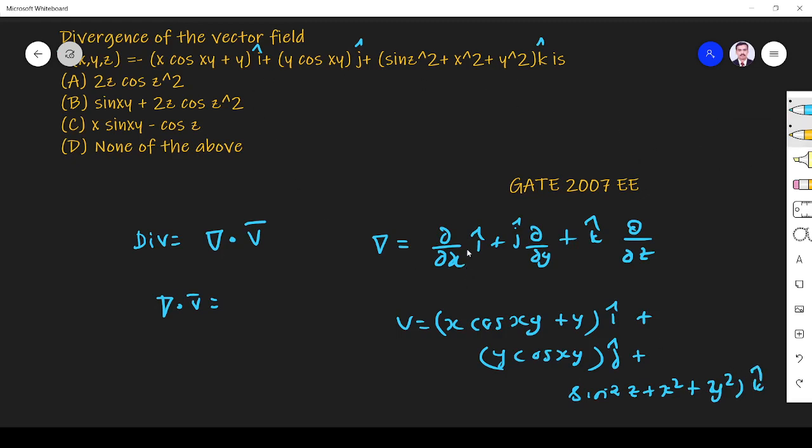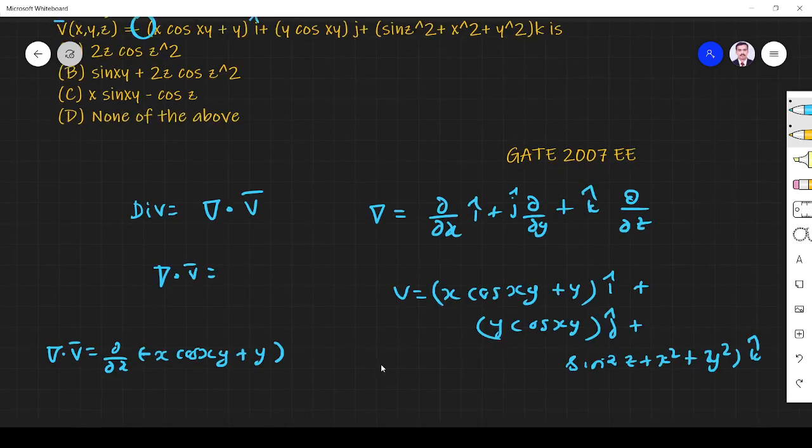If you take a dot product between these two, i dot i is 1. Del dot V is equal to ∂/∂x (x cos xy plus y). I'm sorry, in front of that there is one minus. Here we have one minus.